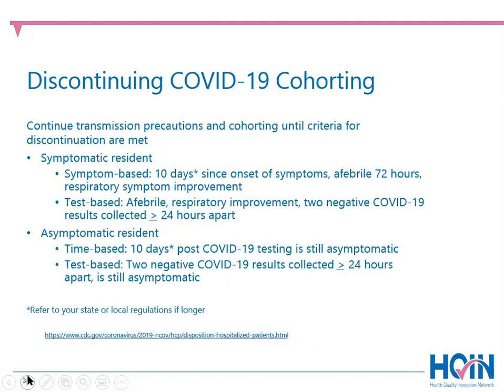Continue transmission precautions and cohorting for all symptomatic and asymptomatic COVID-19 residents until criteria for discontinuation is met. The criteria on this slide are the CDC recommended strategies for discontinuation of precautions for symptomatic and asymptomatic residents. It's important to remember that if your state or local regulations are stricter and include a longer duration, you must follow those stricter regulations. If a symptomatic resident declines or is unable to be tested, continue transmission-based precautions until the symptom-based criteria are met.